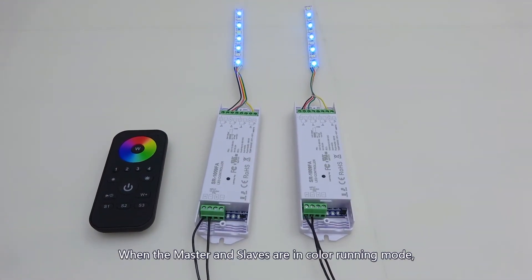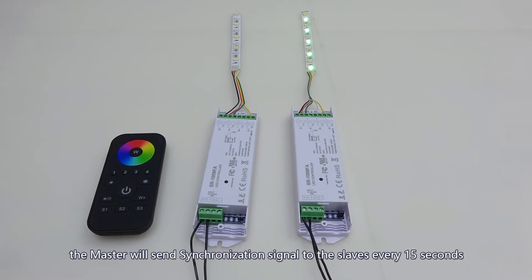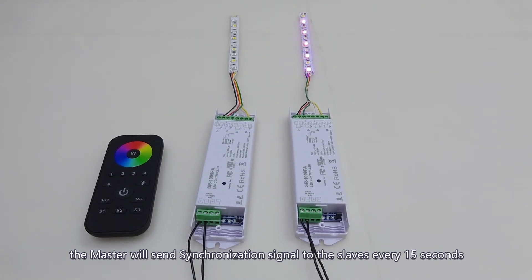When the master and slaves are in color running mode, the master will send synchronization signal to the slaves every 15 seconds.